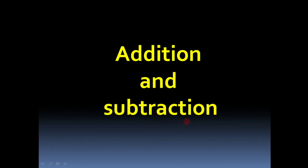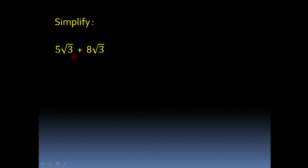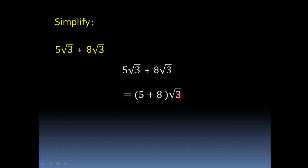First, we start with addition and subtraction. To understand this, we have an example: simplify 5√3 + 8√3. The basic rule to add or subtract any two surds is that the order of the two surds must be equal and the radicand must also be equal. For this example, the order of both surds is two and the radicand is three. So we take √3 as common and add 5 + 8 = 13. The answer is 13√3.